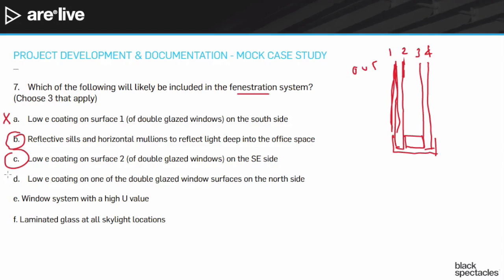Answer D: low-E coating on some surface of double-glazed windows on the north side of the building. But we're at latitude 40 — there's just not going to be any direct sunlight on the north side. The low-E coating really isn't going to do anything for us there. It won't hurt, but we'd be spending money on something that gives very little benefit. So that one's a maybe, but not a strong choice.